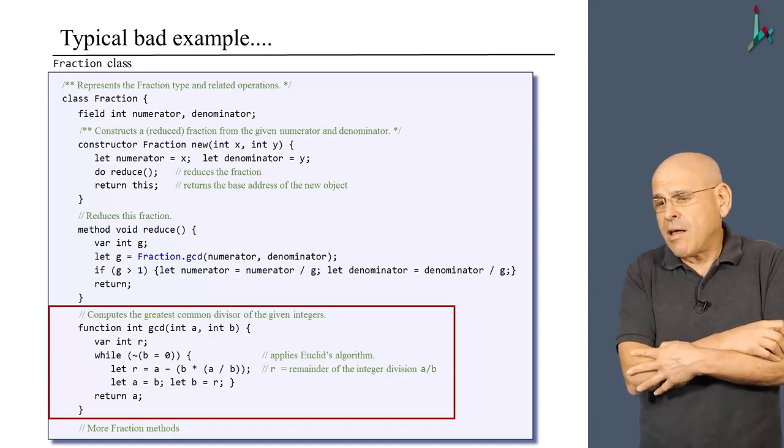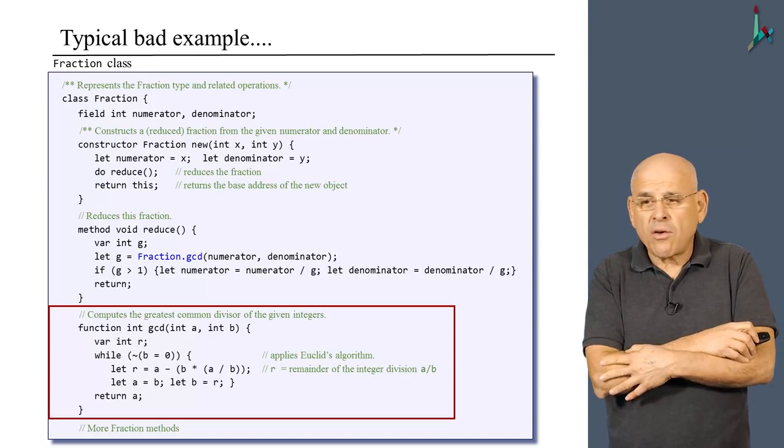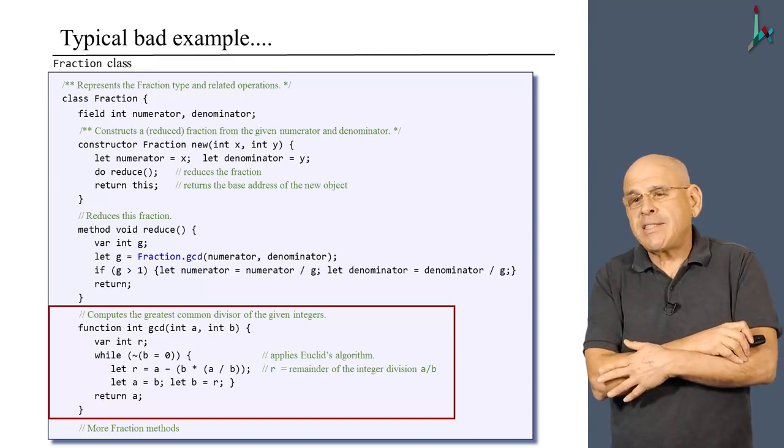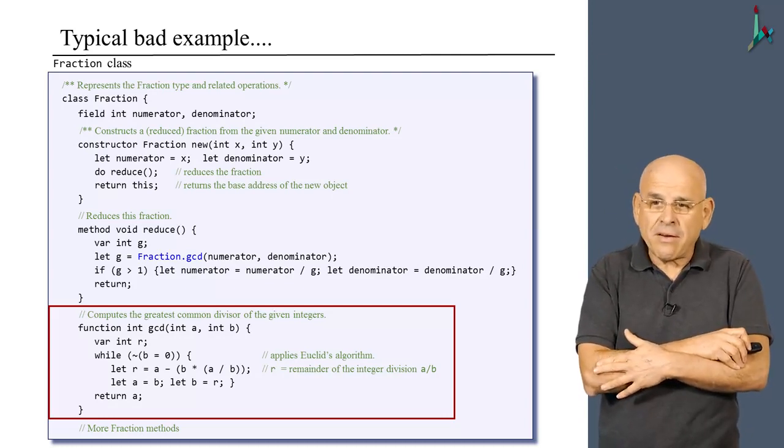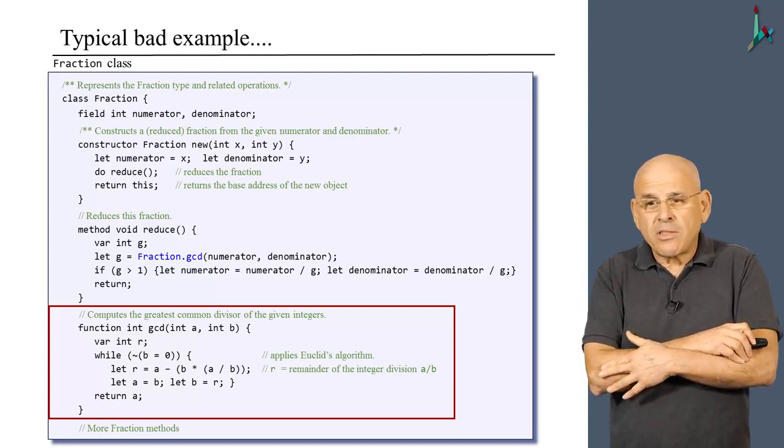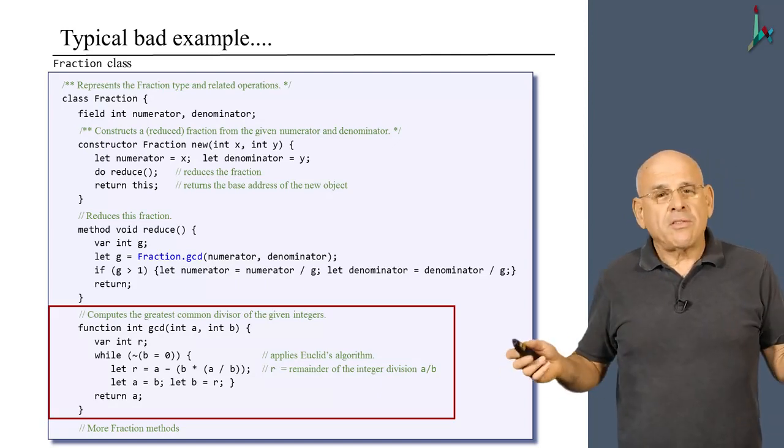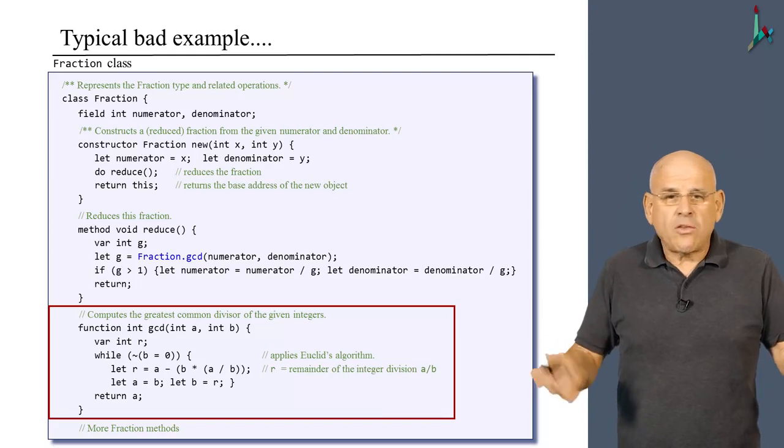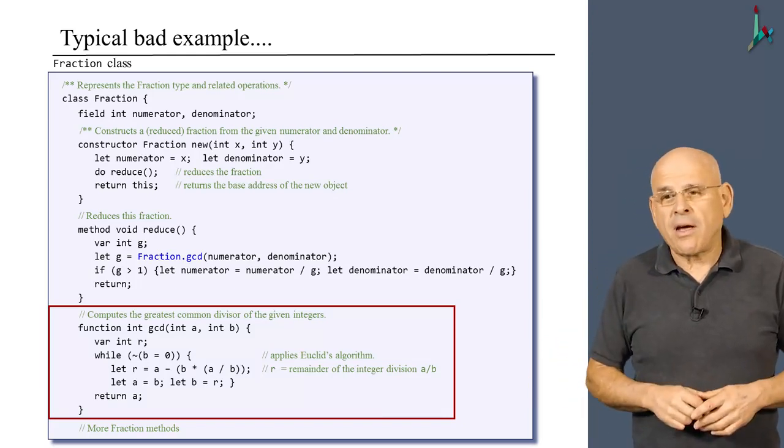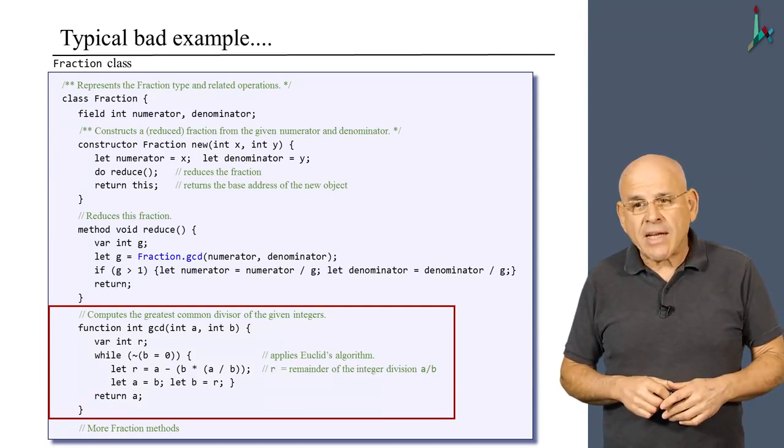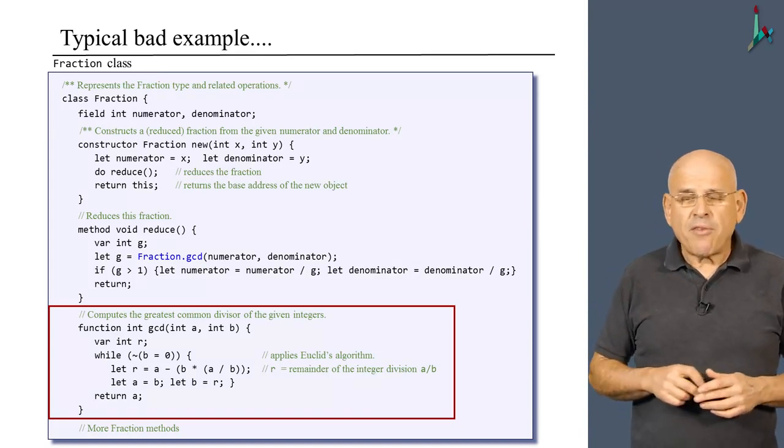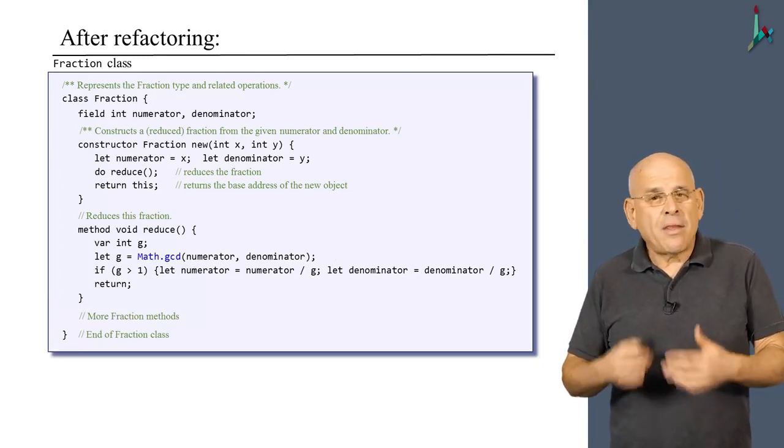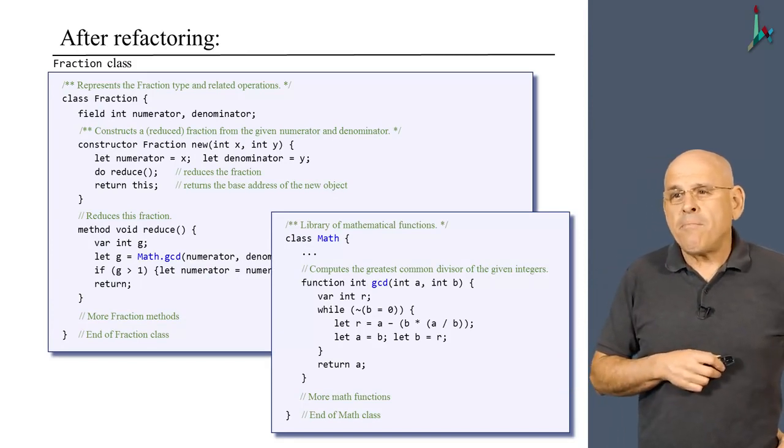First of all, in terms of syntax and Jack's sanity and so on, everything is just fine. The compiler will happily translate this program and it will work perfectly. But from an aesthetics design and practical matters, this is a bad solution because GCD is a very general function. It has lots of things to offer outside the context of fractions. In other words, other classes that do all sorts of other things, for instance with prime numbers, would benefit from being able to access this GCD function. Therefore, it makes perfect sense to refactor this GCD code and put it in a separate class. This class may well be the math class of our operating system or your own math class, which is a library of mathematical functions.